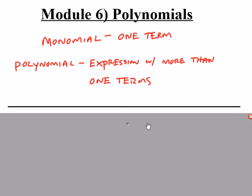In Module 6, we'll be working with polynomials. A polynomial is just an expression that has more than one term. A monomial is a type of polynomial; it just only has one term. But even if you have one term, like a monomial, that's still considered to be a polynomial as well. The prefix poly means more than one, so more than one term.